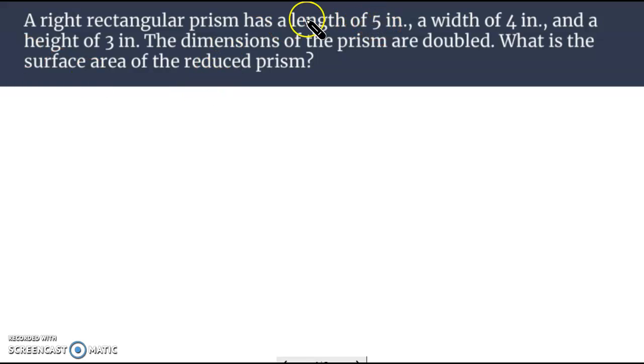A right rectangular prism has a length of five, width of four, and a height of three. The dimensions are then doubled. What's the surface area of the reduced prism?